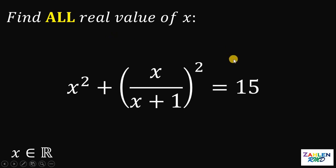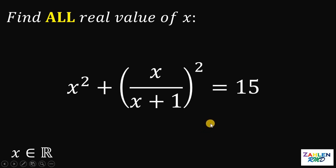How are we going to start the solution for this equation? One approach is to multiply all terms by (x+1)², to cancel out the denominator. But in that process, we get x raised to the fourth power, which is equivalent to 15 times (x+1)². So maybe there is a better way to answer this question.